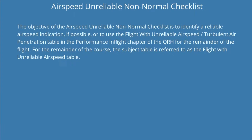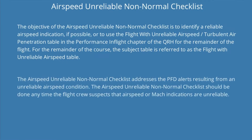The objective of the airspeed unreliable non-normal checklist is to identify a reliable airspeed indication if possible, or to use the flight with unreliable airspeed turbulent air penetration table in the performance in-flight chapter of the QRH for the remainder of the flight. For the remainder of the course, the subject table is referred to as the flight with unreliable airspeed table.